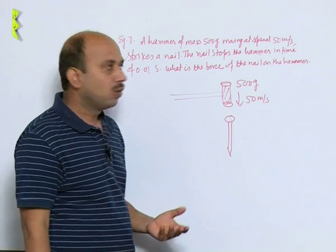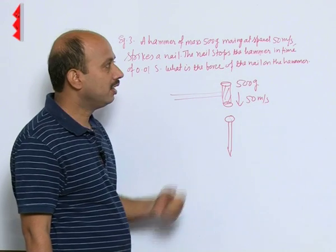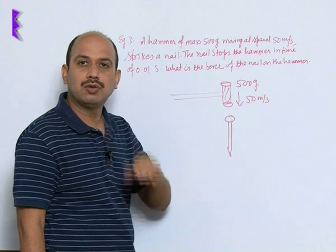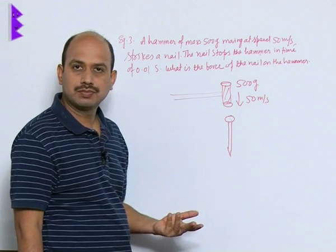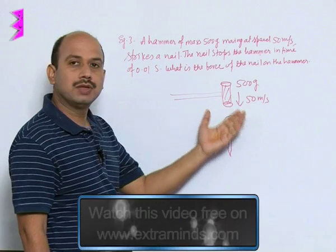So what happened in this case? Whatever is the momentum of the hammer, initially as it strikes, its momentum becomes 0, it means there is a change in momentum. So we can find simply the rate of change of momentum of the hammer.